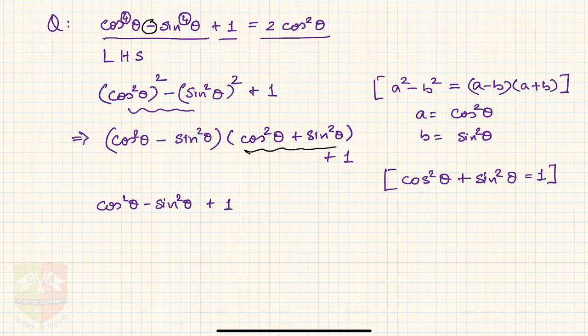Now again using the same identity. Always keep a track of what is to be proven, that is where do you want to go. That means what is RHS. So this is my RHS. I want to achieve 2cos²θ. If you can see one cos²θ is already there. So you want one more.